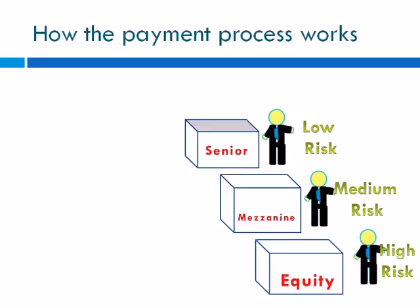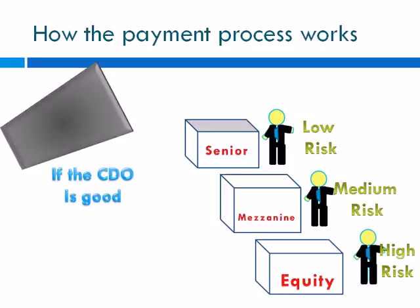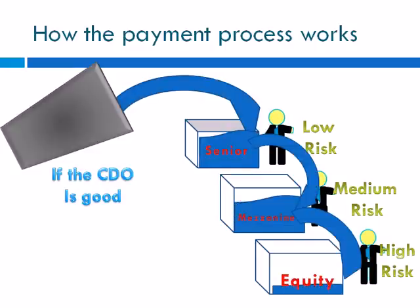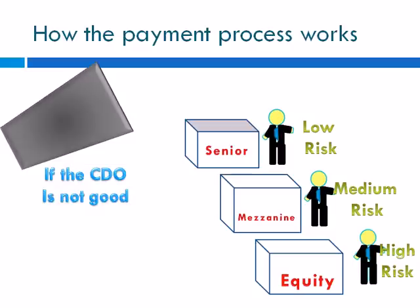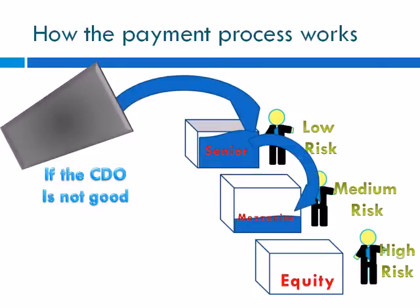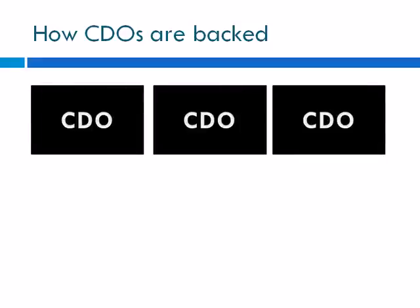The best way to think of a CDO is like a bucket filled with water. If the CDO is good — meaning everyone pays as expected — cash payments will flow out like water in a bucket and fill every tranche. If the CDO is not good — meaning some people cannot pay — some of those tranches won't fill up, particularly those on the bottom.